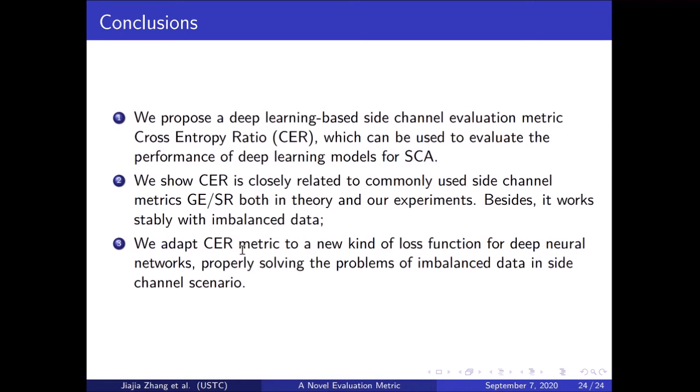In conclusion, we propose cross-entropy ratio, a deep learning based side-channel evaluation metric that can be used to evaluate the performance of deep learning models for side-channel analysis. We show that cross-entropy ratio is closely related to commonly used side-channel metrics — guessing entropy and success rate — both in theory and in experiments. Besides, it works stably with imbalanced data. We also adapt cross-entropy ratio to a new kind of loss function for deep neural networks, properly solving the problems of imbalanced data in side-channel analysis. Thanks for watching. If you have any questions, feel free to send me an email.